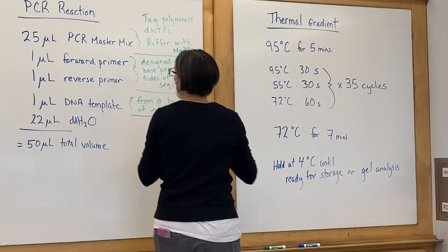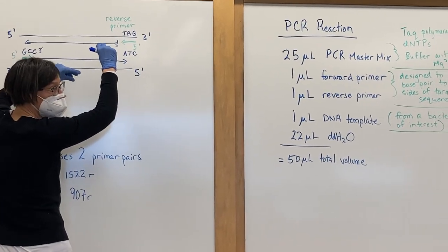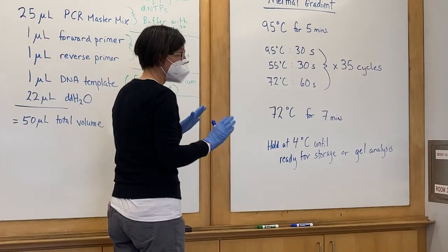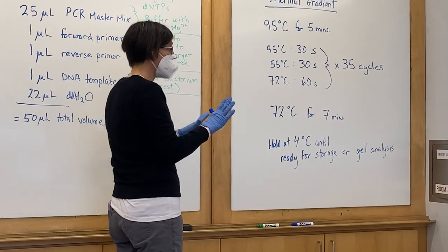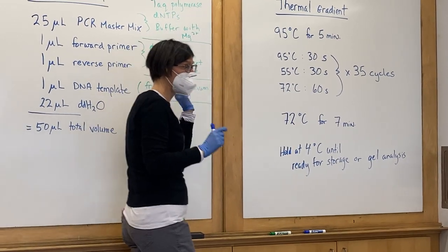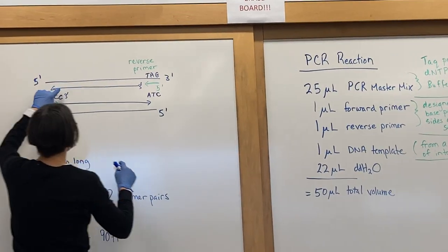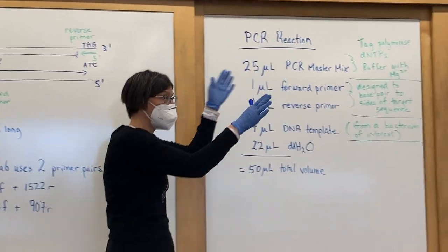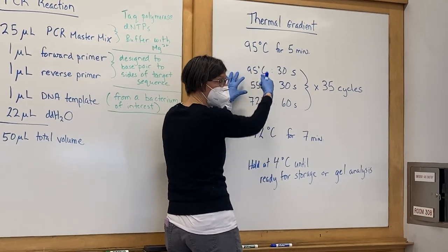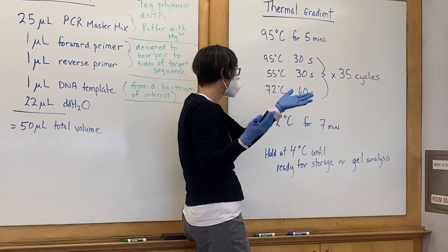95 degrees melts the template apart. 55 degrees lets the primers stick, but not everything back together. It's kind of a sweet spot. 72 degrees, which is pretty warm, we're 37 and a half for reference, so it's pretty hot. But that's where the enzyme, the bacterium that gave up this enzyme, loves to live. So that enzyme's super happy at 72 degrees. That's the temperature at which extension happens. The new DNA is made, copying the old DNA. The photocopier is working at that temperature. Then we loop back around, and do it again. Back around, and do it again. The machine is doing this for us. We're having coffee or something at this time.